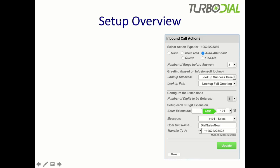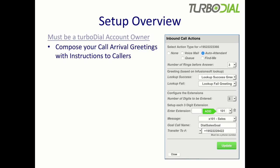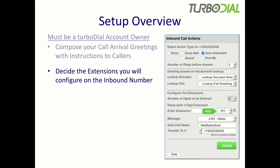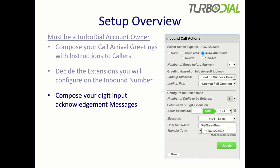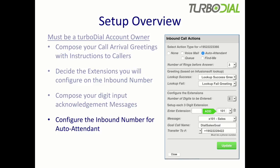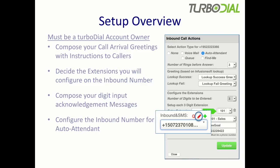Let's do a quick overview before we get into the details of how you set up auto attendant. First of all, you must be a TurboDial account owner — only account owners will have access to these configuration features. You're going to compose your call arrival greetings, decide what extensions you're going to offer, compose any acknowledgement messages for those extensions, and then configure that number with all of that information. You access the auto attendant configuration by clicking the red pencil button when you have selected the phone number in the inbound and SMS selector.